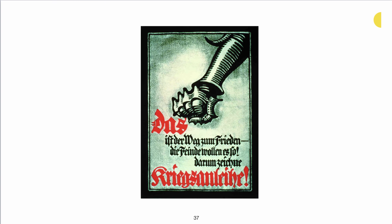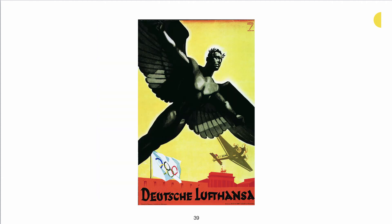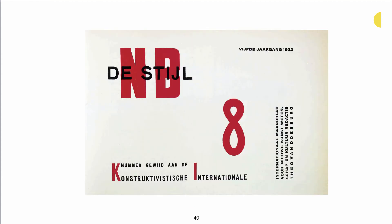Obviously the type is in the black letter font — it's a war poster for a war loan. This is going to be Plakatstil. It's a chair, but we see again those primary colors, horizontals and verticals. It's De Stijl. This next piece for Deutsch Lufthansa is obviously a war-related poster. It's Plakatstil.